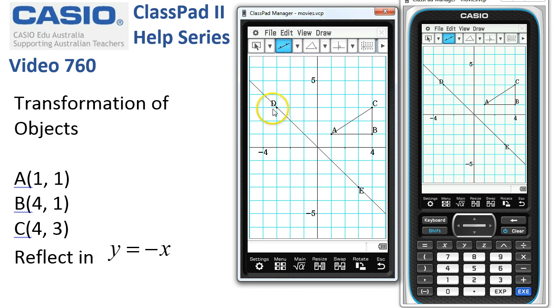Now, we're all ready to go. Let's get the selection tool going here. What we want to do is select the three sides of this triangle and then ask ClassPad to reflect it in this mirror line. Here we go.